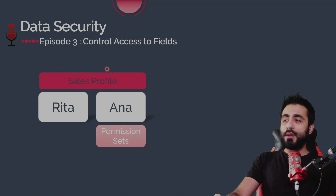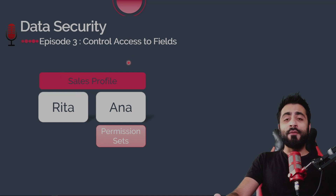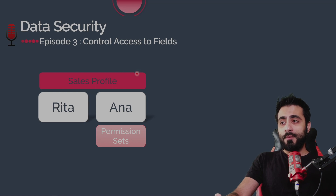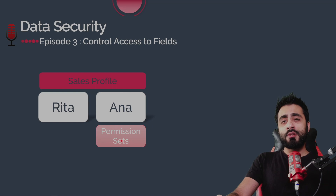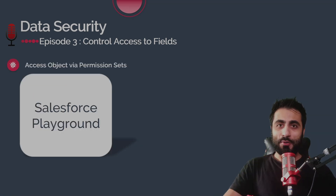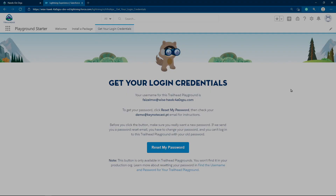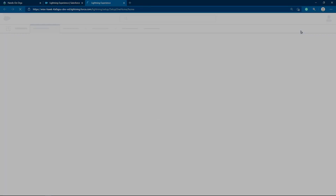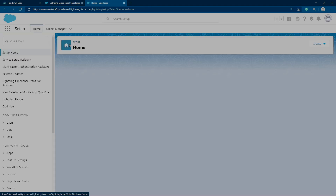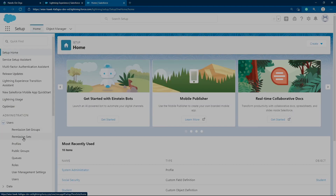A user can have as many permission sets assigned to them as you want, but a user can have only one profile. So we have the sales profile assigned to both Rita and Anna. Today we're going to create a new permission set and assign it to Anna — this permission set will specifically enable Anna to access Cases. Let's go to the Salesforce playground and see that in practice.